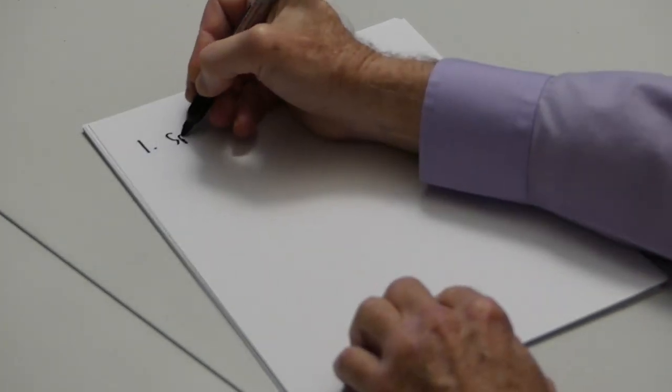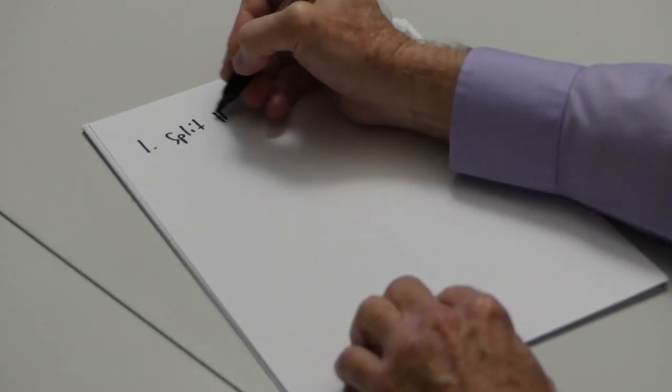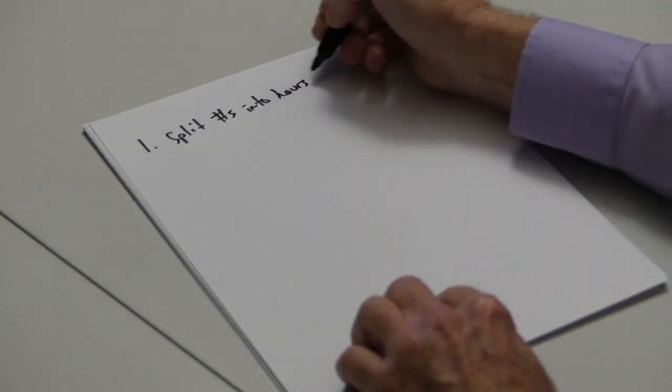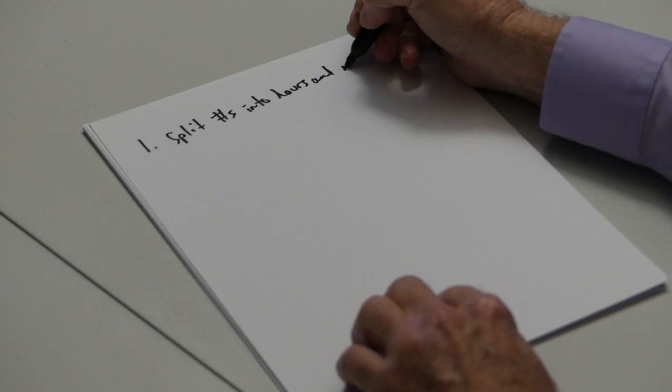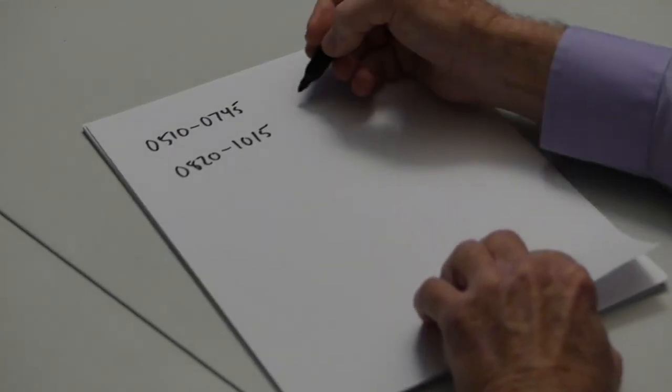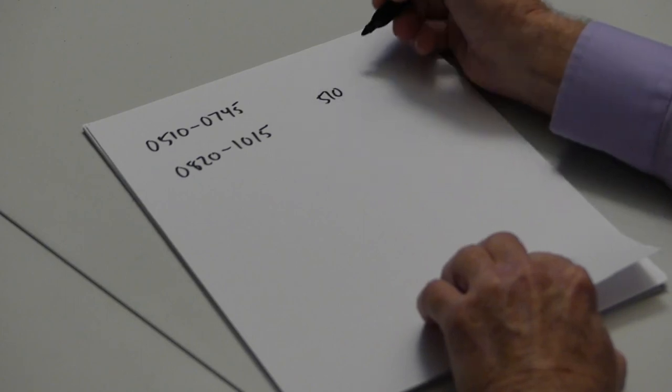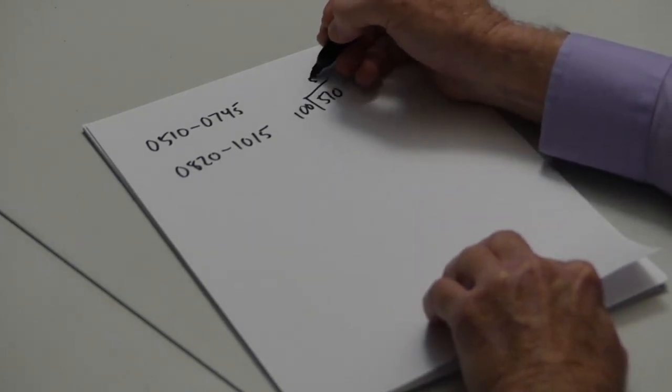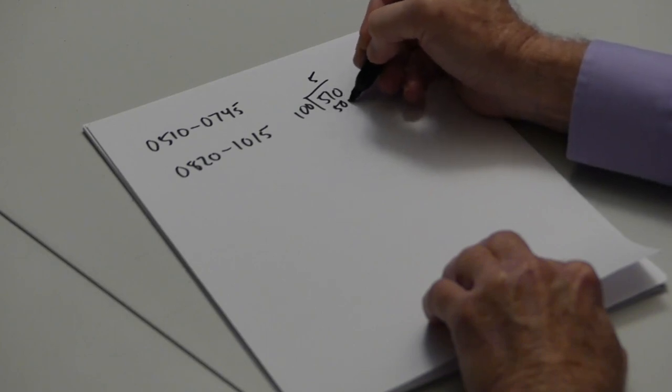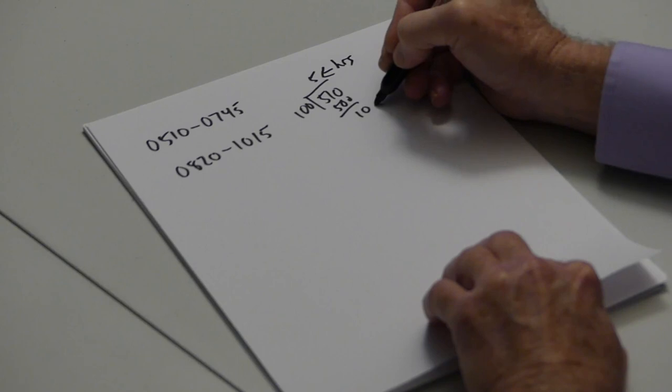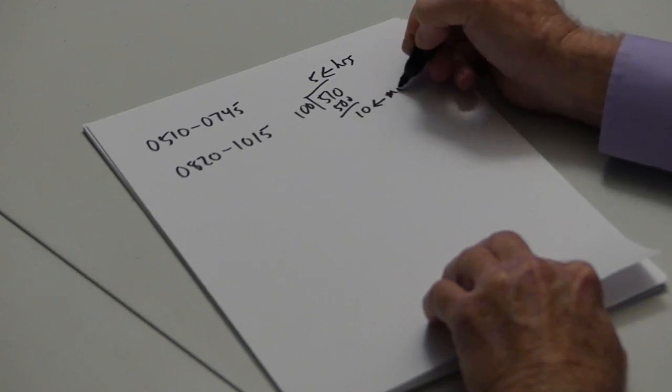Our first step is going to be to split the numbers into hours and minutes. Let's take the number 510. If we divide it by 100, we get a quotient of 5 and a remainder of 10. There's our hours and there's our minutes.